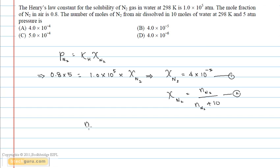Now, solving equations 1 and 2 and finding the value of number of moles of N2, we get number of moles of N2 is equal to 5 into 10 to the power minus 4, which is given in option number C.